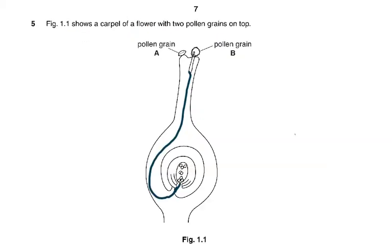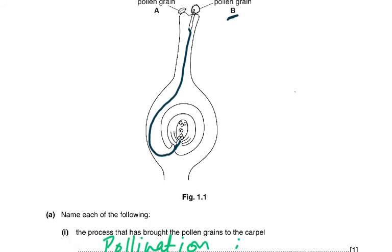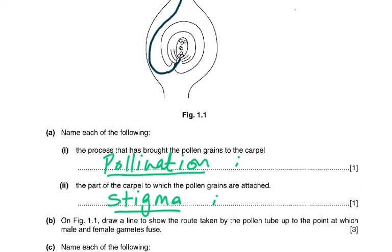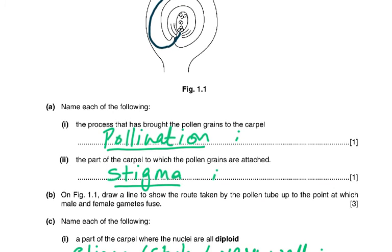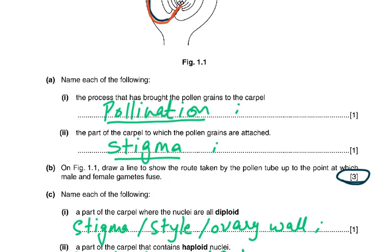Coming to question 5. Figure 1.1 shows a carpel of a flower with two pollen grains on top — pollen grain A and pollen grain B — and a pollen tube has started to grow from pollen grain B. Name the process that brought the pollen grains to the carpel: pollination — transfer of pollen from the anther to the stigma. The pollen grains are attached to the stigma. To draw the route of the pollen tube: a line continuing down the style, entering the micropyle, and touching the embryo sac — three mark scheme points.